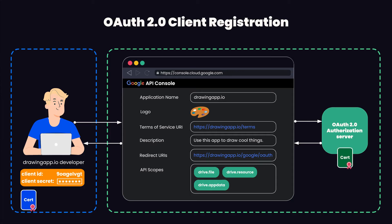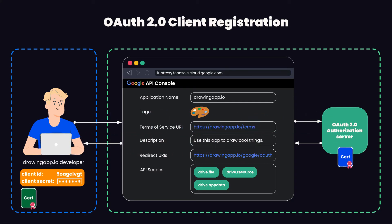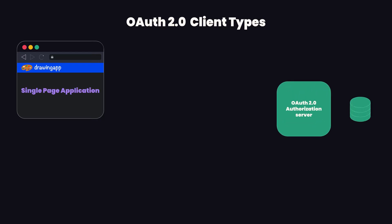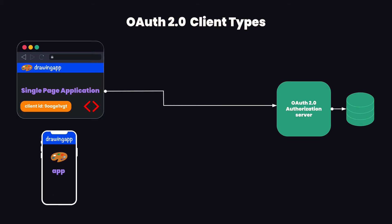OAuth 2.0 also supports other means of authenticating against the authorization server — for example, mutual TLS, which requires a certificate exchange and provides much better security. If you have a single page application without your own backend, that application cannot keep client credentials secret because anyone can just open the dev tools and extract the client credentials. With mobile apps it's similar — if you package your client credentials within the app, anyone could take a look at the bundle and extract the credentials. Therefore, if you have a pure standalone mobile app or a pure single page application without any backend, you will not get client credentials — no client secret, no private and public keys. You will only get a client ID.